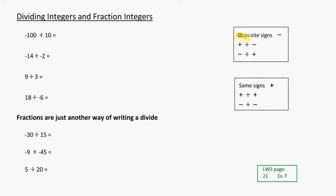But first let's remember, if we have numbers with opposite signs, such as a positive divided by a negative or a negative divided by a positive, we are going to get a negative number. And if we've got the same signs, like positive divided by a positive or negative divided by a negative, we get a positive number.